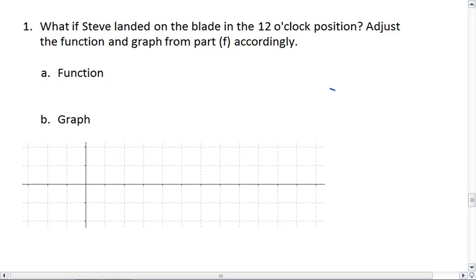We are still working with Steve. Steve still has a radius of 2 feet, the center line is still 2.5 feet off the table, and he's traveling at a speed of 2π/3 radians per second, but now Steve is landing in the 12 o'clock position.